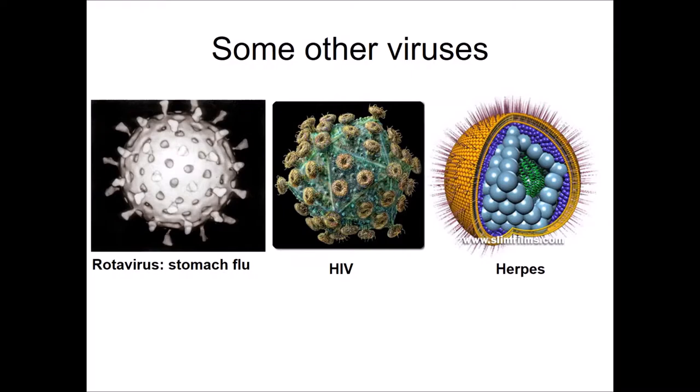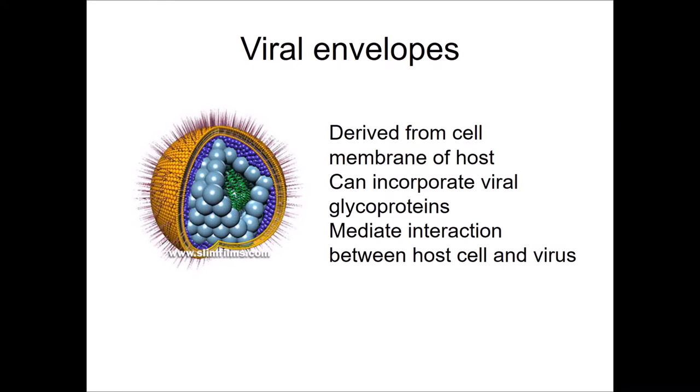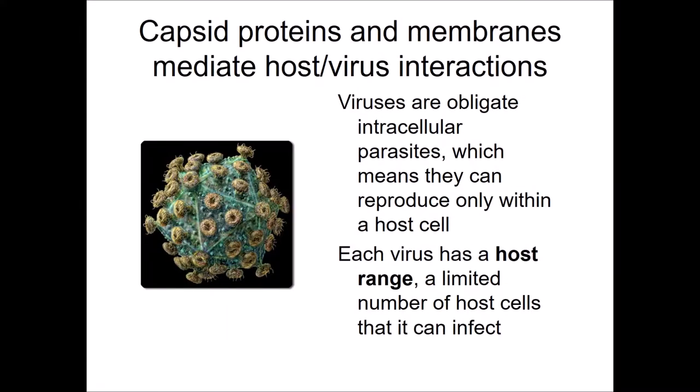We'll look at the HIV life cycle in class on Monday. Viral envelopes like the one in herpes virus are derived from the cell membrane of the host, but they can incorporate viral glycoproteins. They mediate the interactions between a host cell and a virus. Viruses are obligate intracellular parasites, which means they can only reproduce within a host cell, and each virus has a host range — a limited number of types of host cells and species that it can infect.